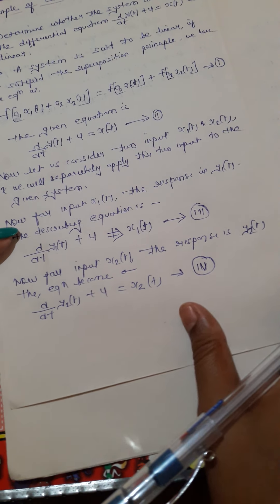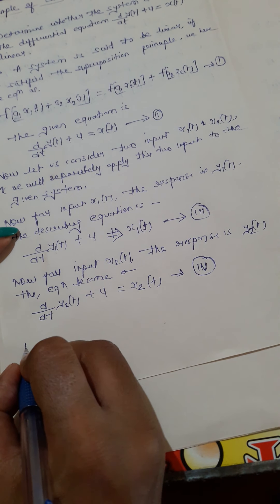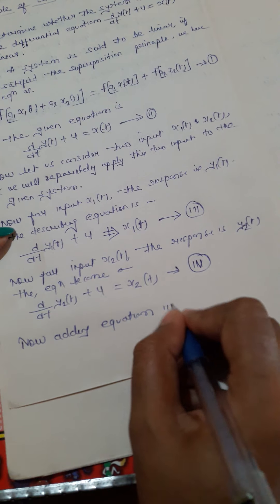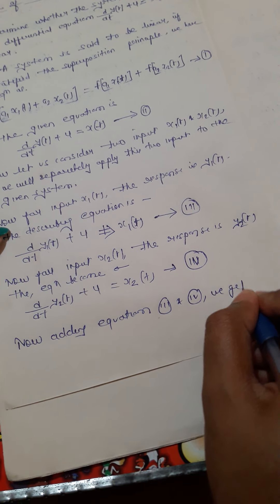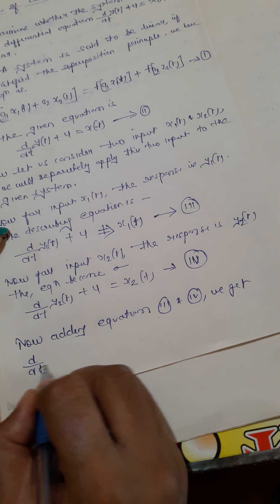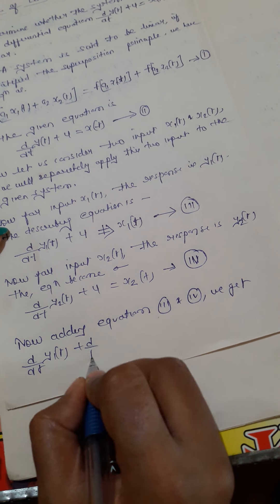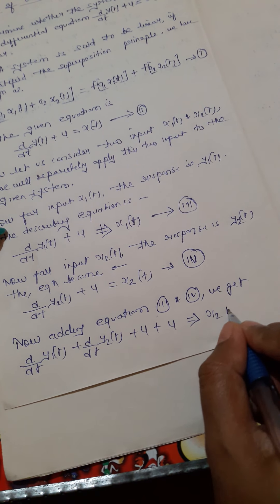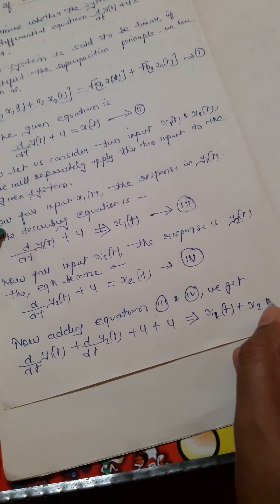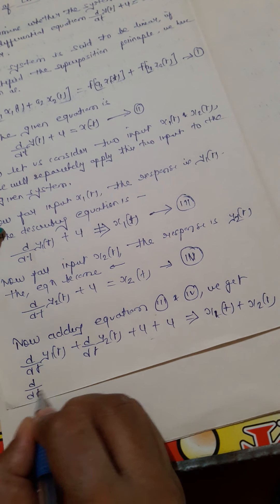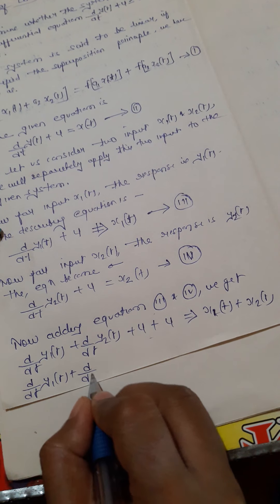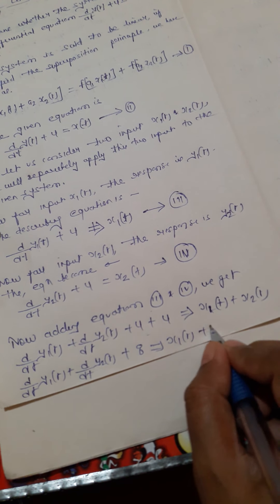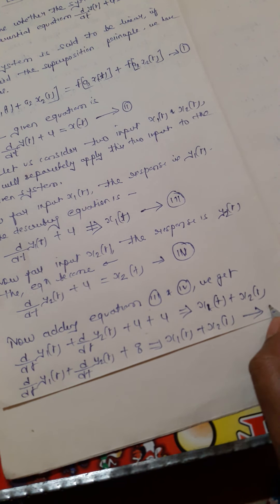Now we have to add equation three and four. Adding equation three and four, we get: d/dt of y1(t) plus d/dt of y2(t) plus 4 plus 4 equals x1(t) plus x2(t). That gives us d/dt of y1(t) plus d/dt of y2(t) plus 8 equals x1(t) plus x2(t). This is equation number five.